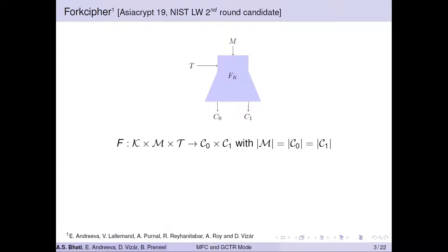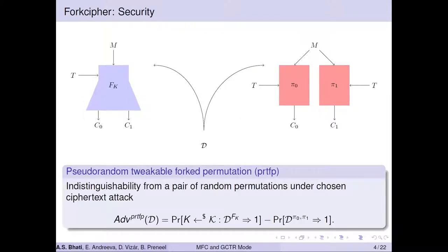Fork Cipher is a tweakable cipher that takes an input block M, tweak T, and key K as input, and returns two output blocks C0 and C1 from the same space as input M. Fork Cipher was introduced at ASIACRYPT 2019 by Andrew Whiteyall and was also a second-round candidate of the NISTLAT competition. The security of Fork Cipher is defined by its indistinguishability from a pair of random permutations under the chosen ciphertext attack, dubbed as PRTFP.